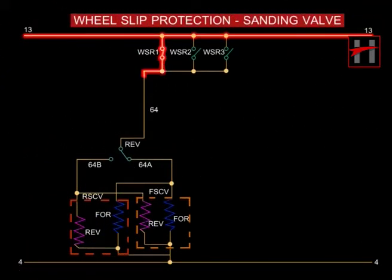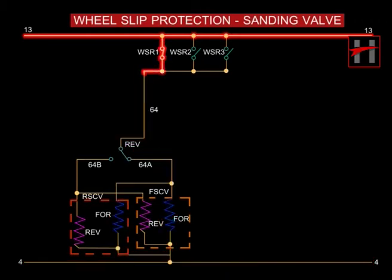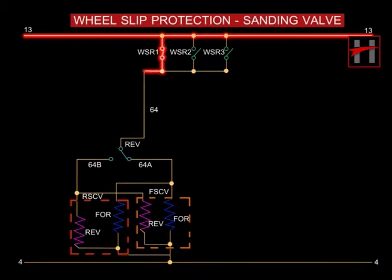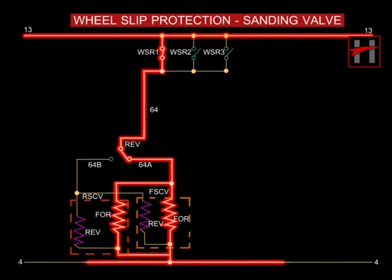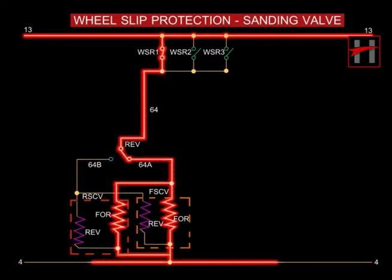The sanding valve in the forward and reverse direction gets energized automatically through cable number 13 and via the interlocks of the concerned WSR, cable 64, reverser interlock in the forward or reverse direction, and cable 64A. On energization, sanding valves blow pressurized air into the sand tank, resulting in the flow of sand on the track.